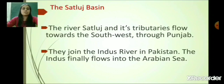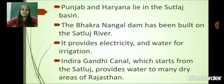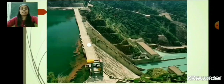Punjab and Haryana lie in the Satlaj Basin. The Bhakra Nangal Dam has been built on the Satlaj river so that we can generate electricity and use the water for irrigation. The Indira Gandhi Canal, which starts from the Satlaj, provides water to many dry areas of Rajasthan.